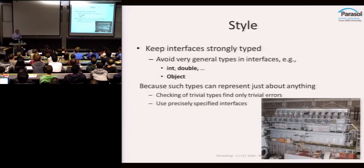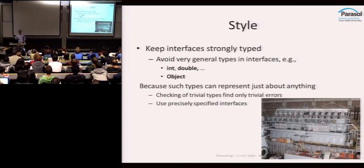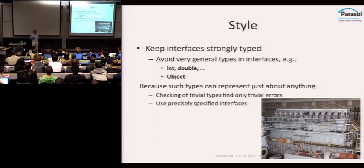Avoid very general interfaces. I worry when I see int or double — what does it mean? An int can encode just about anything. I would much rather see a speed than a double. And in object-oriented programming, I worry about 'object' — there isn't such a thing as an object; it's an abstraction that represents a lot of things. I can see matrices, dial buffers, threads. If you say you take an object, you really should be able to work on any object given to you. The alternative is you look at the object at runtime and say 'I don't like it' — which can be quite painful in terms of time, speed, and logic.